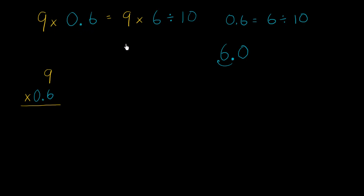Or we could do the 9 times 6 first. So let's do 9 times 6, which we know how to calculate, and then divide by 10, which we also know how to do. That's all about just moving the decimal place.